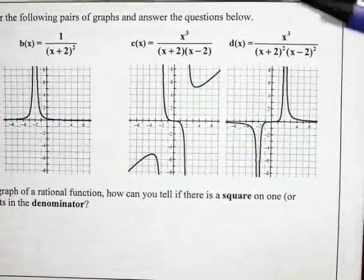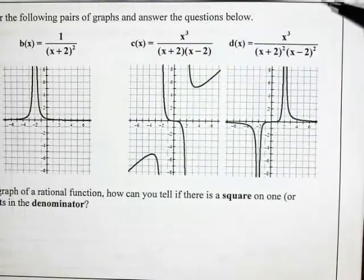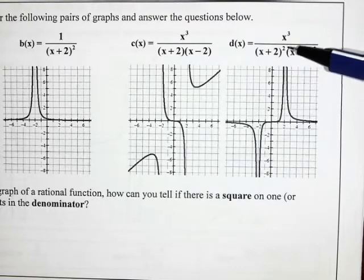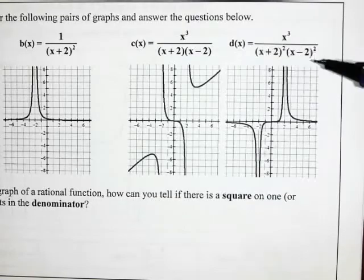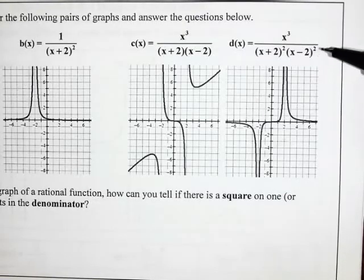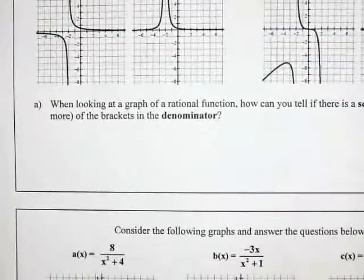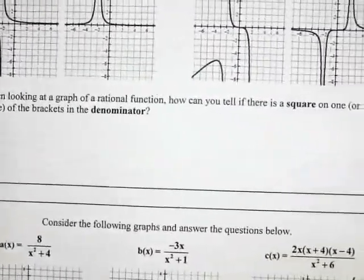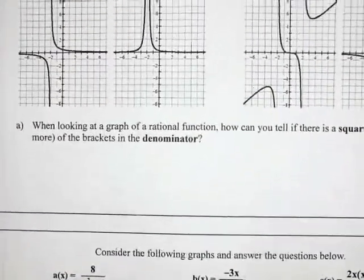This one here, I have x³ over (x+2)(x-2) and then this one is x³ times (x+2)²(x-2)². So the difference between these two is that there are squares on the denominator. So let's look at what it's asking. It says when looking at a graph of a rational function, how can you tell if there's a square on one or more of the brackets in the denominator?